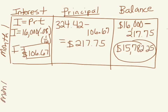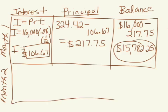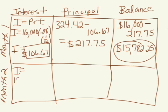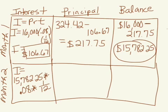We'll do month 2. Month 2, our interest is our principal, which is now $15,782.25, times our interest rate of 8%, times 1 over 12, because we're only talking about one month.